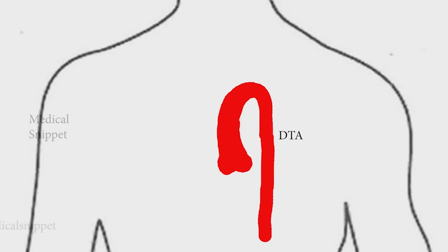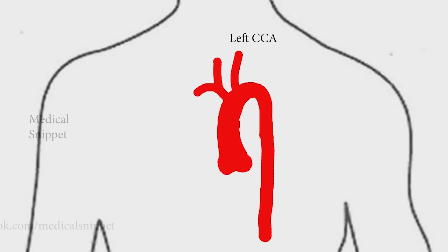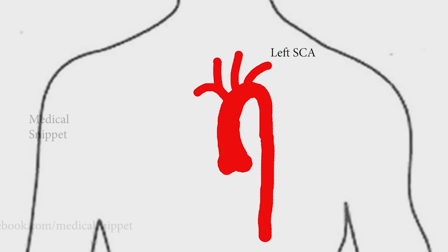The arch of the aorta has three branches: the brachiocephalic trunk, dividing into the right common carotid and right subclavian artery; the left common carotid; and the left subclavian artery. But the first branches of the aorta are the coronary arteries.